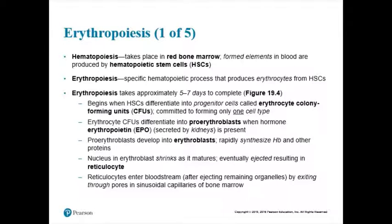We need to mature this hematopoietic stem cell into a mature red blood cell. That process typically takes about a week, starting in your red bone marrow. The hematopoietic stem cell will then transform into something called an erythrocyte colony-forming unit. So the progression starts as a hematopoietic stem cell, then matures into an erythrocyte colony-forming unit.